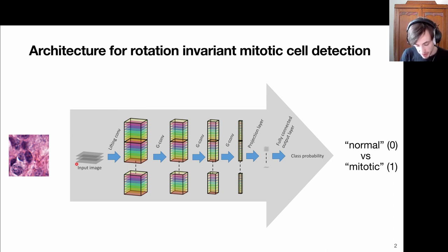We start off with an input image, then apply a lifting convolution which adds an extra axis to it, which encodes the pose under which a certain feature is detected.